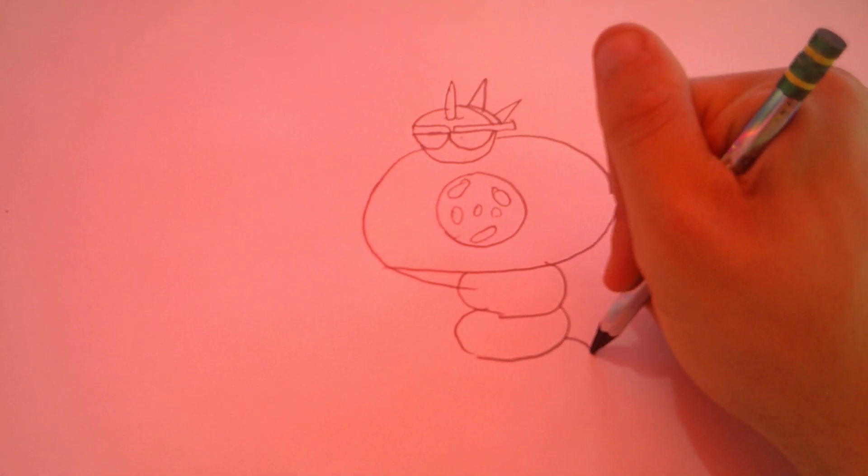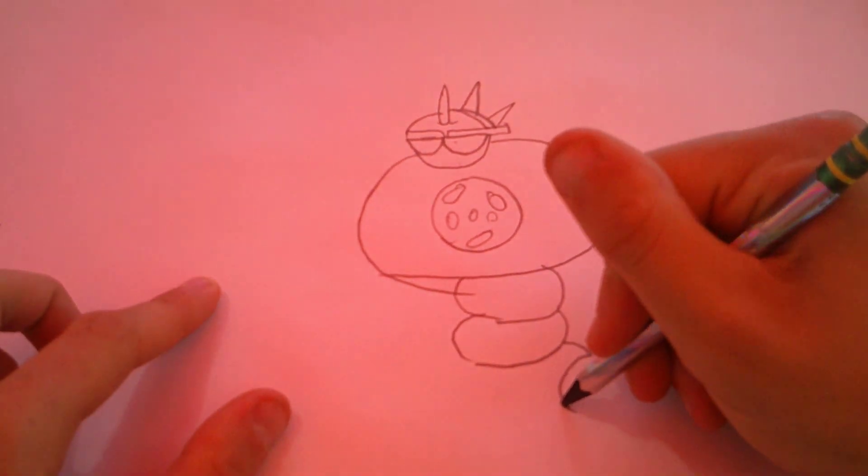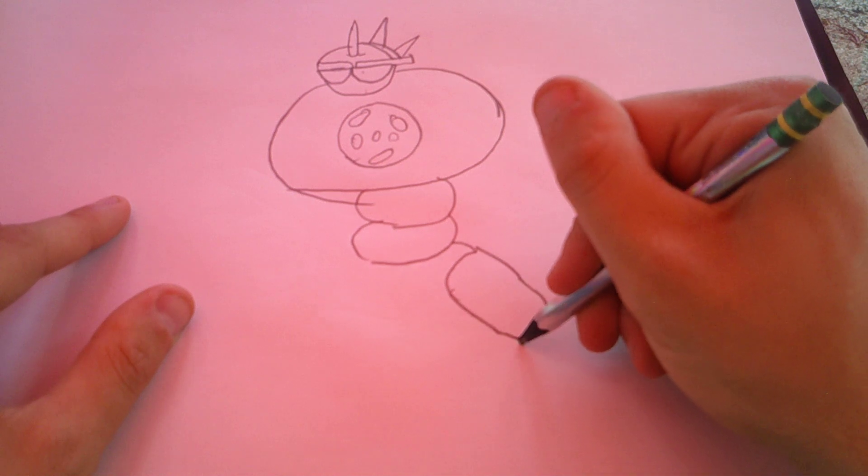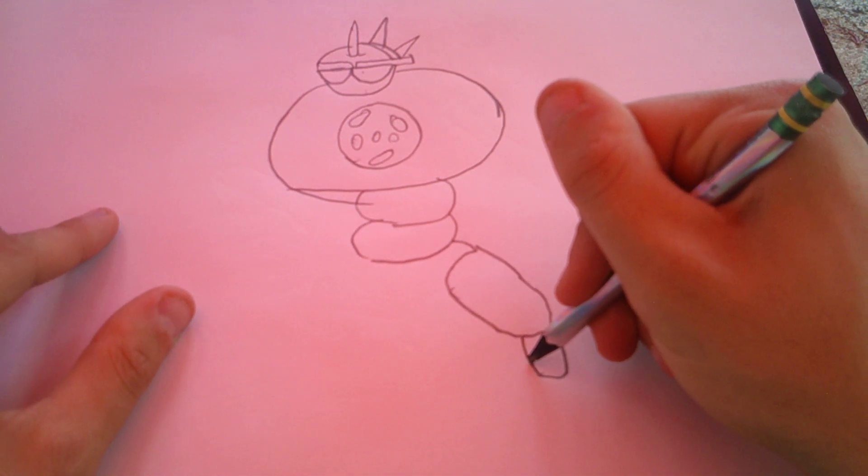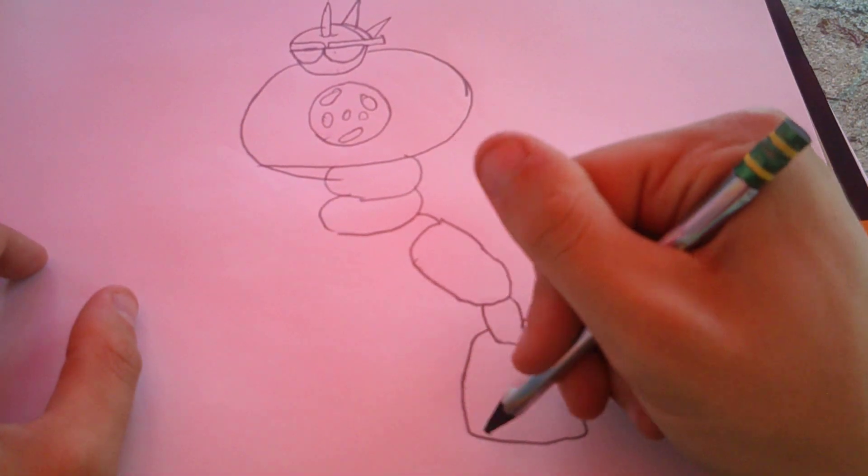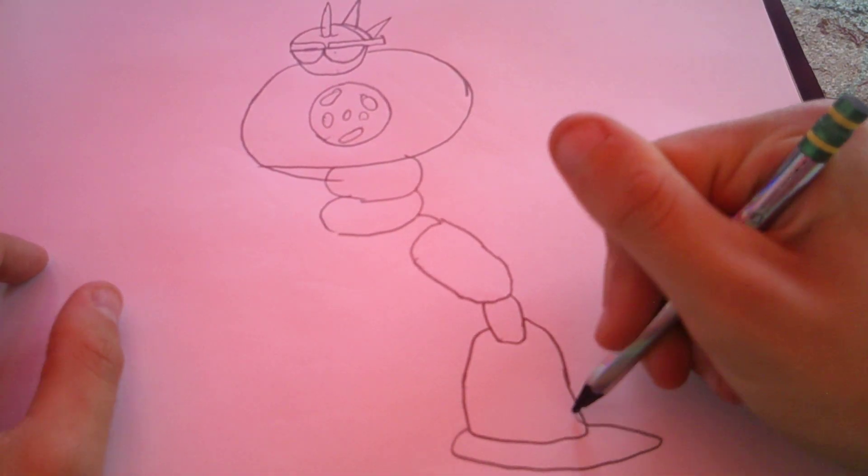Tonight, we're going to draw a Tactus from Mighty Magiswords. They first met this guy and managed to achieve the Cactus Magiswords.